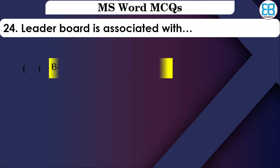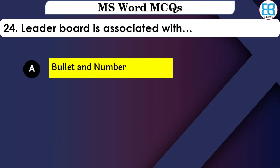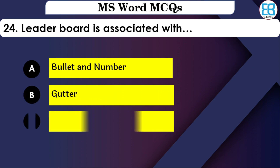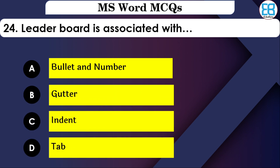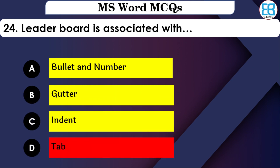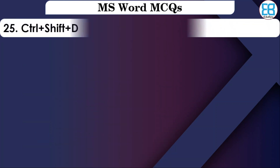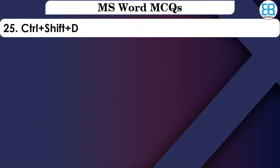The Tab Leader Board is associated with which feature? The options are: Bullet and Number, Indent, or Tab. The correct option is Tab — the Leader Board is associated with Tab.